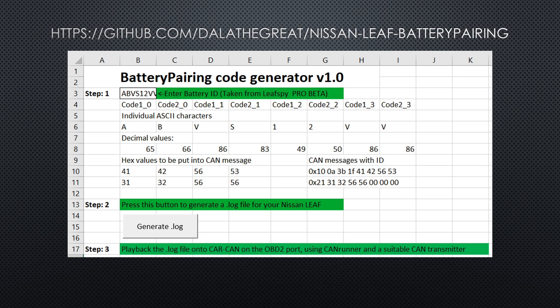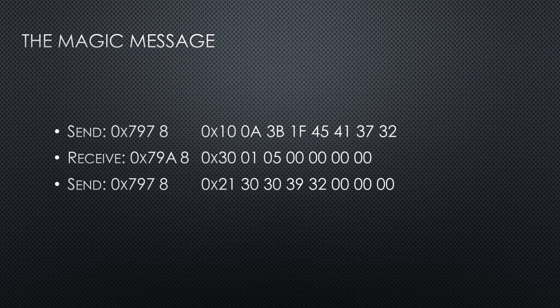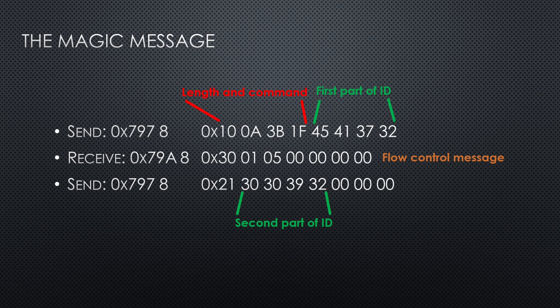But how does it work? Let's examine the messages. It is really simple. All the magic happens when you send these two commands. The first message contains some info about the length and the command that we want to perform. It also contains the first part of the new ID that we want. The vehicle then responds with a flow control message, and you can then transmit the rest of the ID in a second message. That's it!